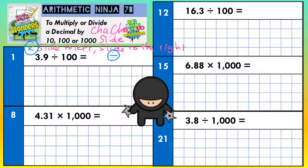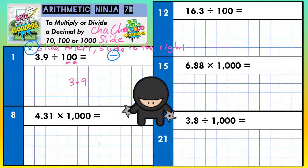We've got a few questions of each type, so we'll have a look and see how it goes. Question number one: we've got 3.9 divided by 100. I always recommend people start by just writing the question again — so 3.9. We are dividing, so that's divide to the right. And we're going by 100, so that means two zeros — move your digits two places to the right. Starting with the 3, the 3 is going to go 1, 2 places to the right, but on the line underneath.